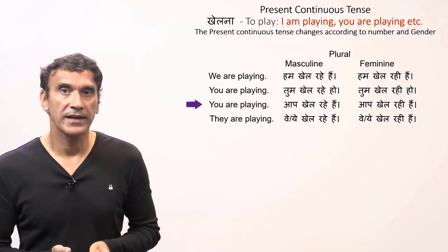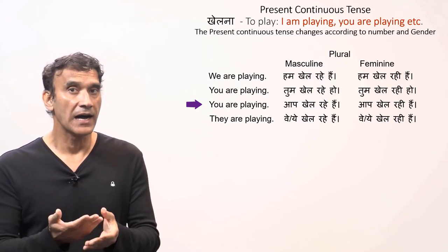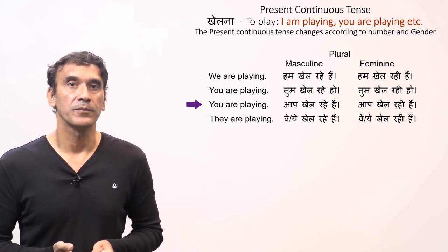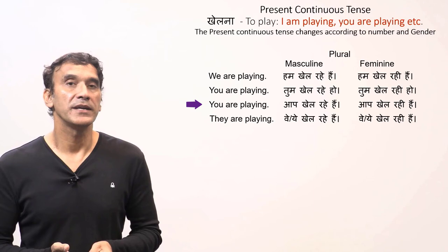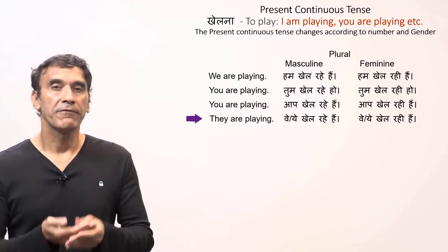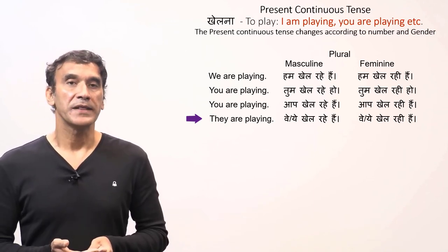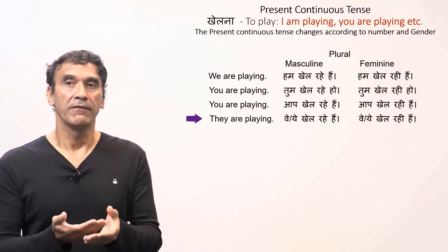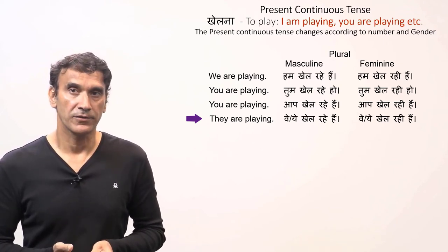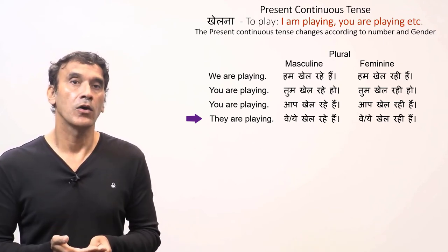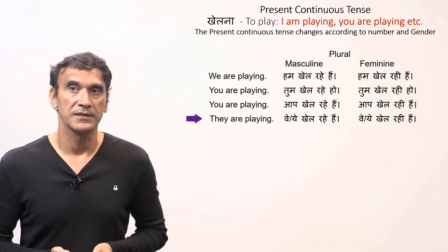For 'aap', it is 'aap khel rahe hain' for the masculine form and 'aap khel rahi hain' for the feminine form — both translate as 'you are playing'. Finally, for the third person plural, 'they are playing' would be 'woh' or 'yeh khel rahe hain' for a masculine subject and 'woh' or 'yeh khel rahi hain' for a feminine subject.